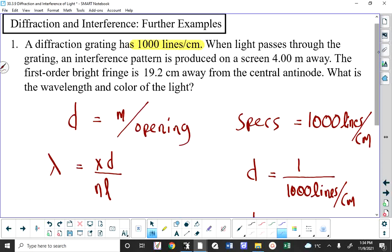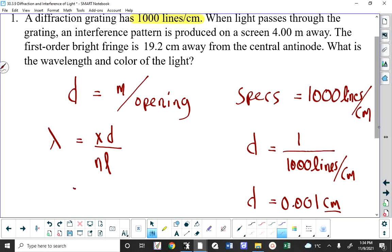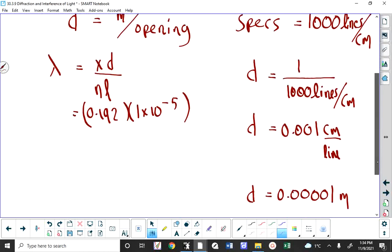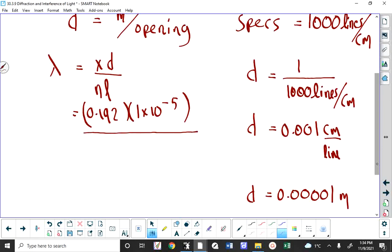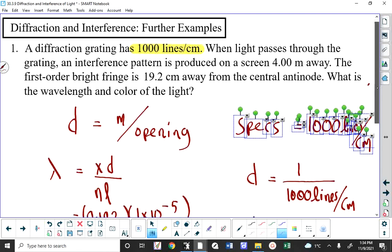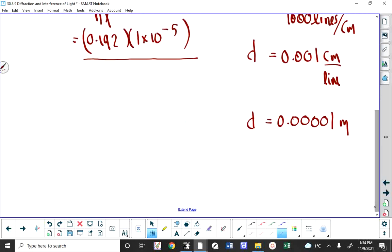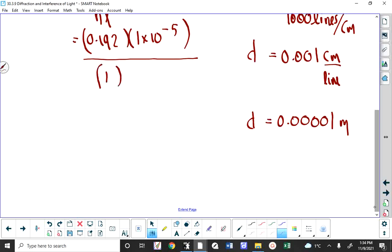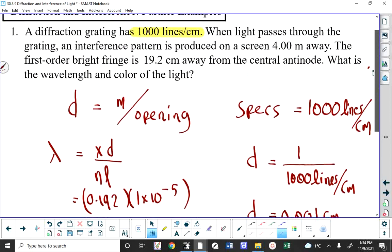So we can use this formula. It's just a matter of going XD over NL. X is 0.192 meters. D, we calculate it as 1 times 10 to the negative 5 by taking the reciprocal of the specifications of the diffraction grating and converting it to meters over N. I've got to be careful here. I already had a run-in with N today. N is 1 here because it says the first-order bright fringe.